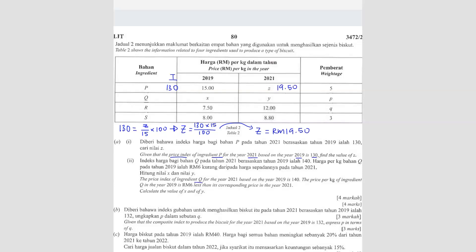The price index of ingredient Q for 2021 based on 2019 is 140. So here the Q price index is 140. The price per kg of ingredient Q in 2019 is X, and this X value is 6 ringgit less than the price in 2021, which is the Y value.